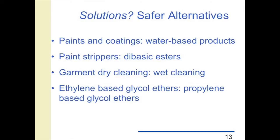At the Toxics Use Reduction Institute, we always ask: what's the solution? In many cases, there are safer alternatives available. For paints and coatings, there are water-based products. For paint strippers — we gave the example of methylene chloride — there are safer alternatives based on, for example, dibasic esters. In garment dry cleaning, which uses PERC or perchloroethylene, we found that wet cleaning works: you can use a small amount of water and detergents in special equipment, along with special tensioning equipment to finish garments, and get equivalent results. For ethylene-based glycol ethers, there are propylene-based glycol ethers that work as well. These are just a few examples of safer alternatives available.